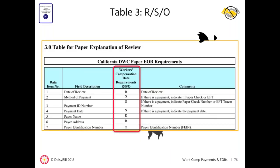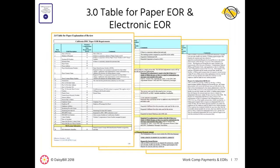Now let's turn to Table 3 of Appendix B, which contains specific data item requirements. In the third column, R means the data item is always required, S means required depending on the situation, and O means it's optional. We aren't going to go over each data item, but we want to highlight some of the most important EOR elements.